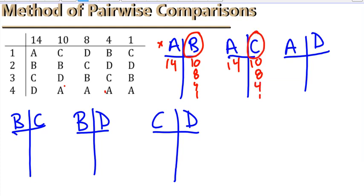A versus D, A gets 14. We see that A is in last place here, so the other candidate is going to get 10, 8, 4, 1, D wins.